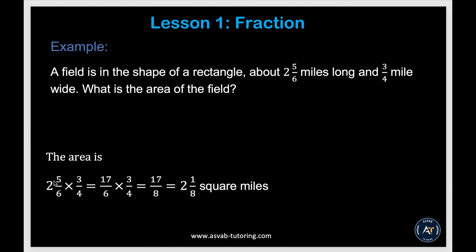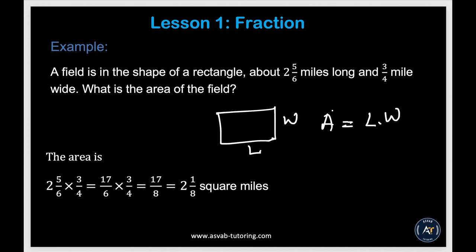Now let's apply multiplication and division to word problems. A field is in the shape of a rectangle, 2 and 2 fifths miles long and 3 quarter miles wide. What is the area? Area equals length times width. Convert the mixed number to an improper fraction, multiply top to top and bottom to bottom, and you get 2 and 1 sixth square miles. We'll revisit this concept in the geometry lesson.